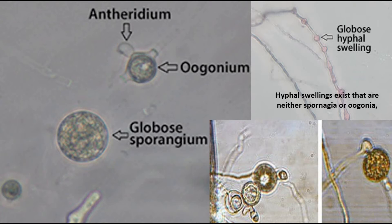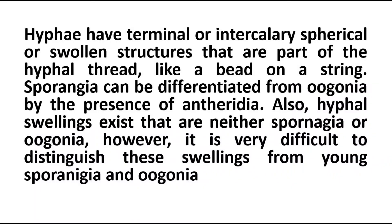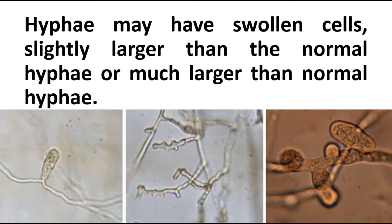You can see here the antheridium and oogonium and also the globose sporangium. In addition to these reproductive structures, the hyphae also show globose hyphal swellings which are neither antheridia nor oogonia. They are not sexual structures, but the hyphae show such swellings and these swellings are often mistaken for the sex organs in case of Pythium. Hyphae have terminal or intercalary spherical solenoid structures that are part of the hyphal thread and have nothing to do with sexual reproduction.